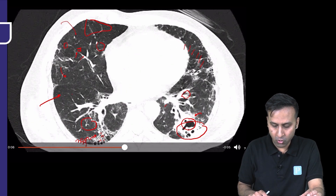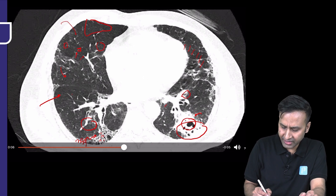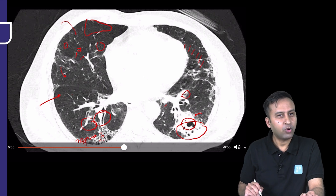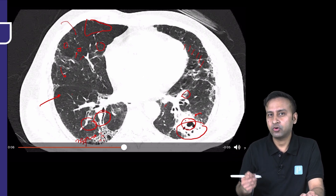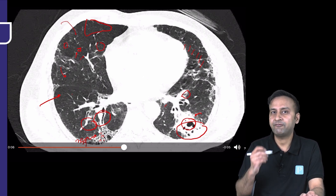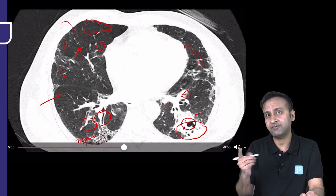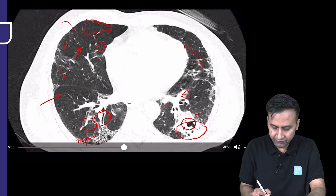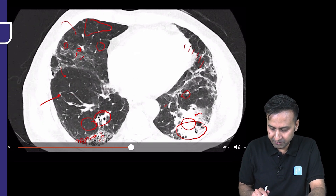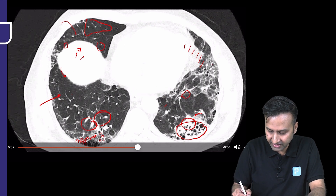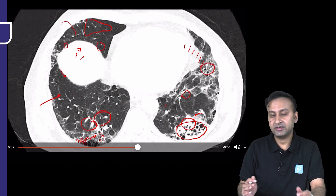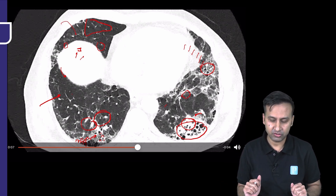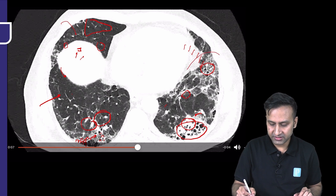One important sign that remains is traction bronchiectasis. Does this bronchus look tapering to you? Our definition of traction bronchiectasis is a non-tapering bronchus — after the bifurcation, even after two centimeters, the bronchus shows no tapering or narrowing. Secondly, if you can see bronchial structure along the peripheral most part of the lung and trace it up to within one centimeter of the lung parenchyma, that is also diagnostic of bronchiectasis. This is classical traction bronchiectasis.